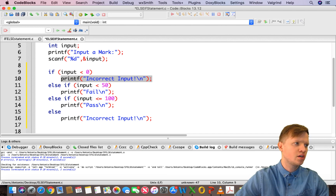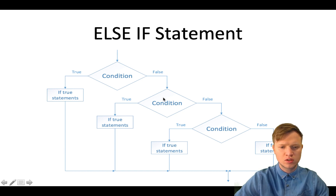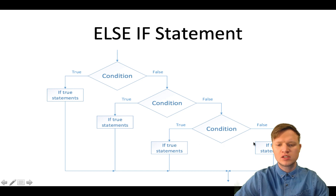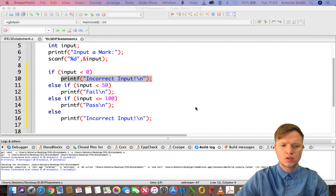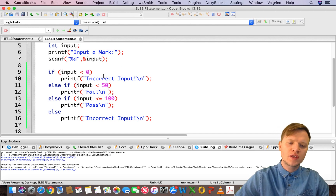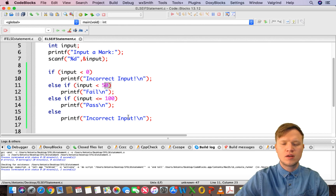Let's go back to the else-if flow diagram to confirm. If we follow the path down to the condition and it's true, only that statement executes and we continue with the rest of the code. If it was false, we go to the next condition — if true, only that one executes. So only one of these four statements will execute, and in our case each one is a printf. We're working from small to big: smaller than zero, smaller than 50, smaller than or equal to 100, and then above 100.